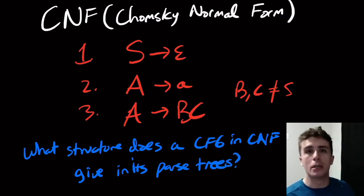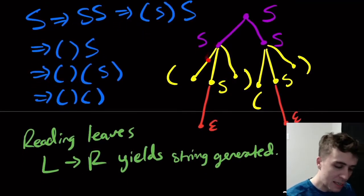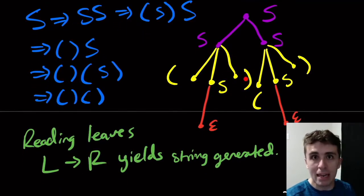And because the grammar's in Chomsky normal form, because the right hand side has only two variables or a single terminal, it turns out that we can actually simplify what the parse tree can actually look like.